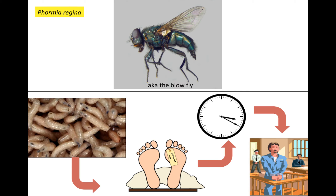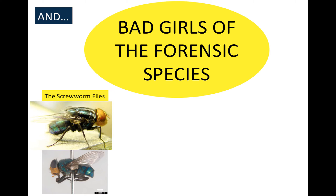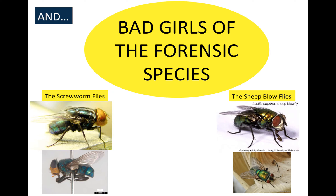Not all of them lay eggs only after death. There are some problem flies in forensic entomology. Particularly, there are two genera of flies that can cause issues: the screw worm flies and the sheep blowflies. The screw worm fly at the top left is present in North America. Below it is its sister species, which has been eradicated from North America — that bottom one is the really bad one and causes a lot of problems.